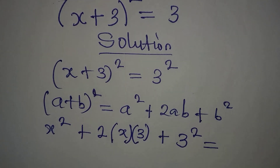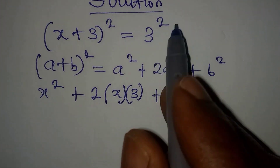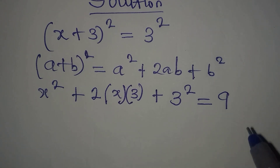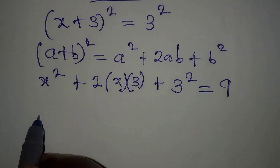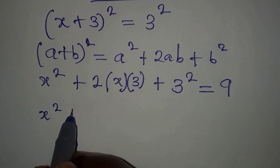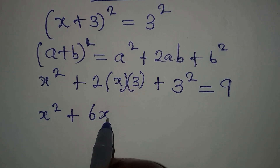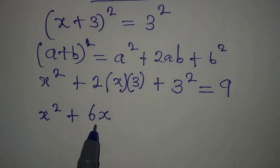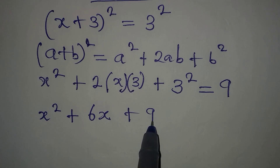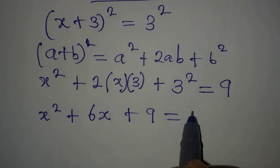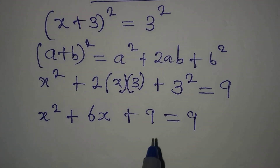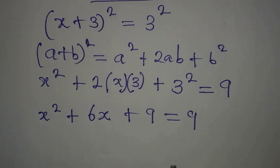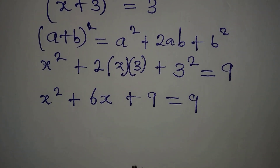This will now be equal to 3 squared on the right, which is 9. Continuing, x² + 6x — because 2 times x times 3 gives us 6x — plus 9 is equal to 9. 3 squared is 9, so that 9 comes down here.